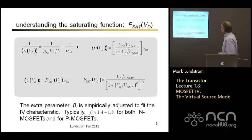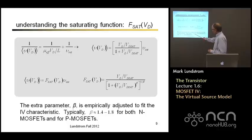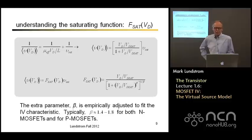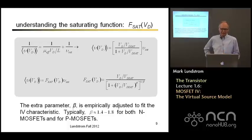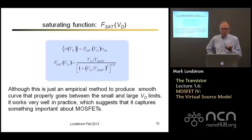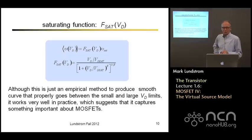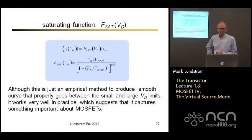This extra parameter typically doesn't vary a lot — typically between 1.6 and 1.8 for N-channel MOSFETs and roughly 1.4 for P-channel MOSFETs. But it's a parameter that we adjust for the particular device to get the best fit to the IV characteristics. So although this is an empirical parameter, it does produce a smooth curve, it does the right thing, and in practice it works remarkably well.